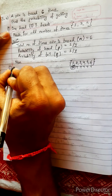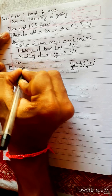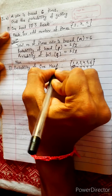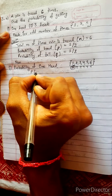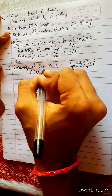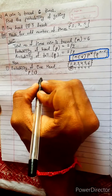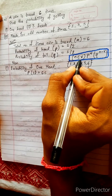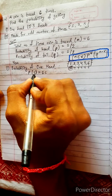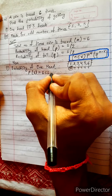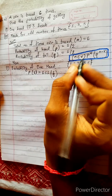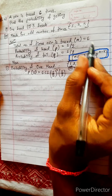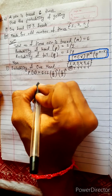Probability of one head is represented by P(1). And what is its formula? Let's write the formula. N means six, C, and R means how many heads we need — one head, so one. P means one by two, power R, where R means one. And Q means also one by two, power N minus R, where N means six, six minus one is five.